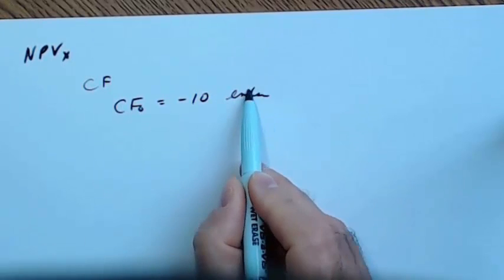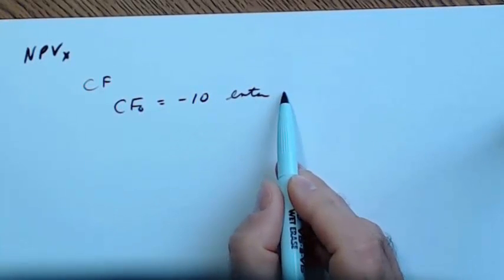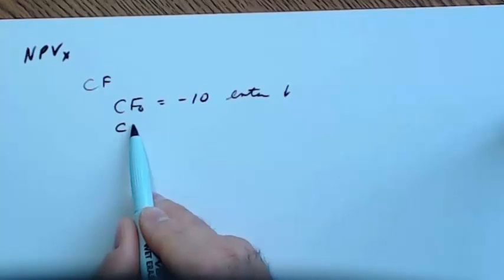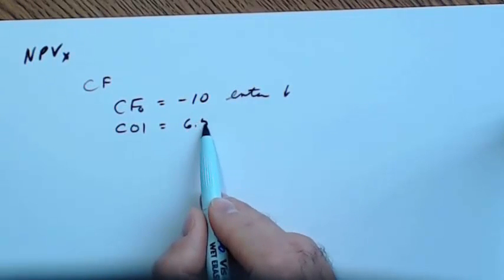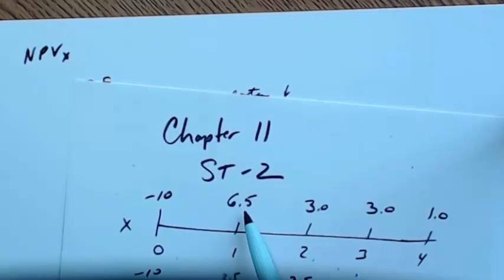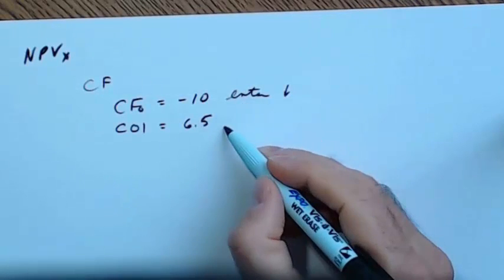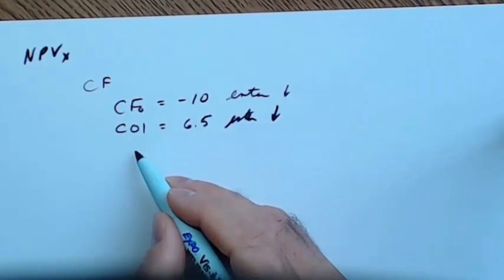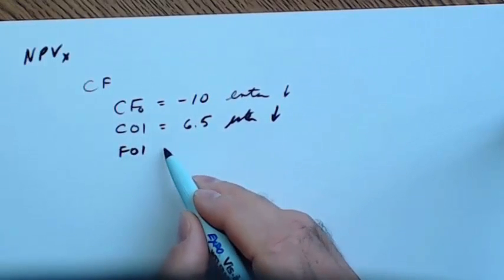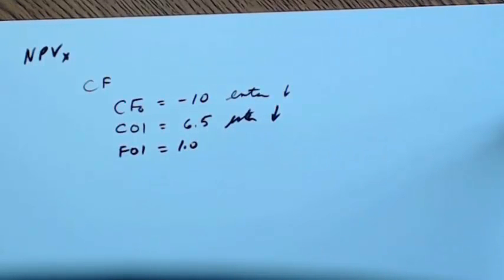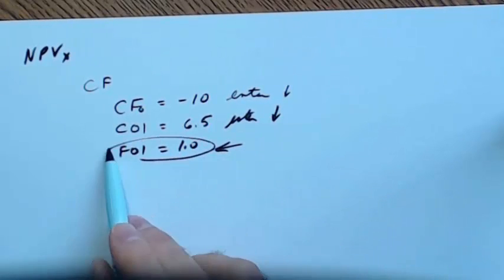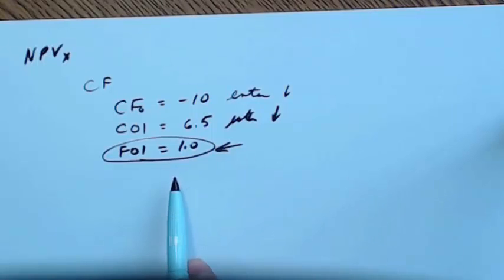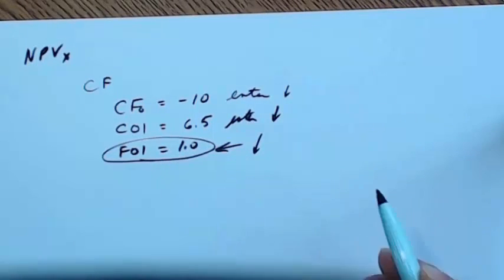Put minus 10 in with the negative sign and hit enter, then the down arrow. CO1 — cash flow for period 1 — will pop up, and we're going to put 6.5 in there, the first cash flow. Hit enter and then down. It will show FO1, the frequency of the cash flow in period 1. In this course, it's always 1 for all the F values, so just skip by it by hitting the down arrow.